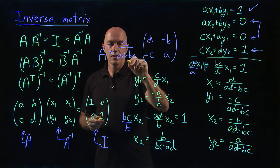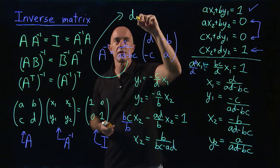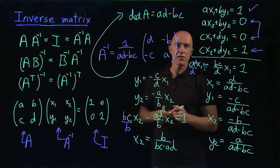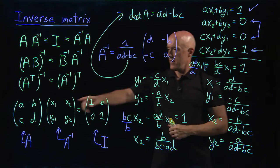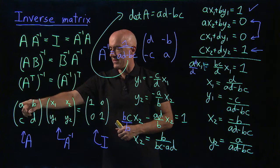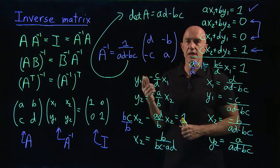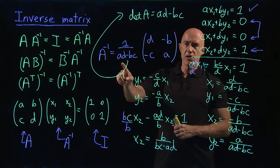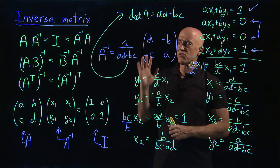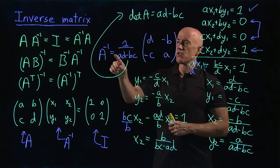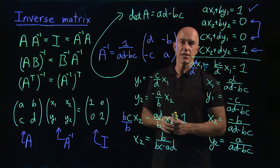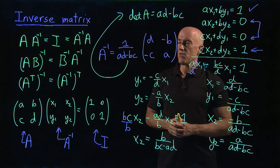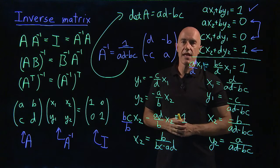This piece here, ad minus bc, is what we call the determinant of A, is ad minus bc. And that's for a two-by-two matrix. So that is this two-by-two matrix, the determinant is ad minus bc. And the interesting thing here is that if ad minus bc equals zero, you're dividing by zero. So there is no inverse matrix. So if the determinant of A equals zero, then the inverse does not exist. The matrix is not invertible. That's a very important result, and we'll go into that more for the general n-by-n matrix.